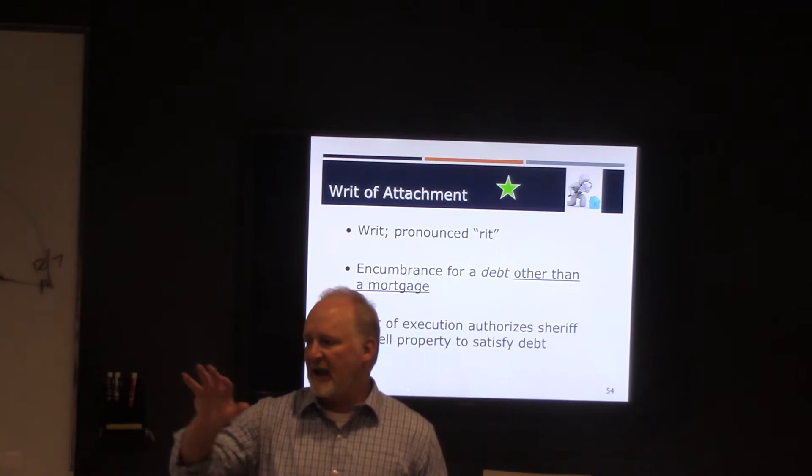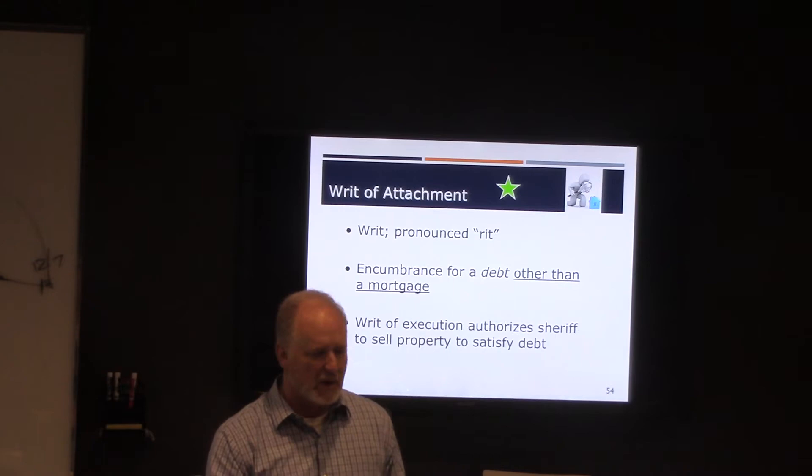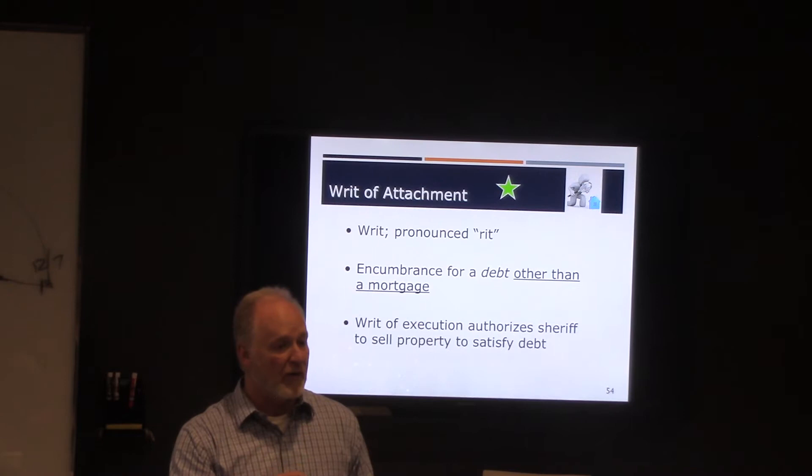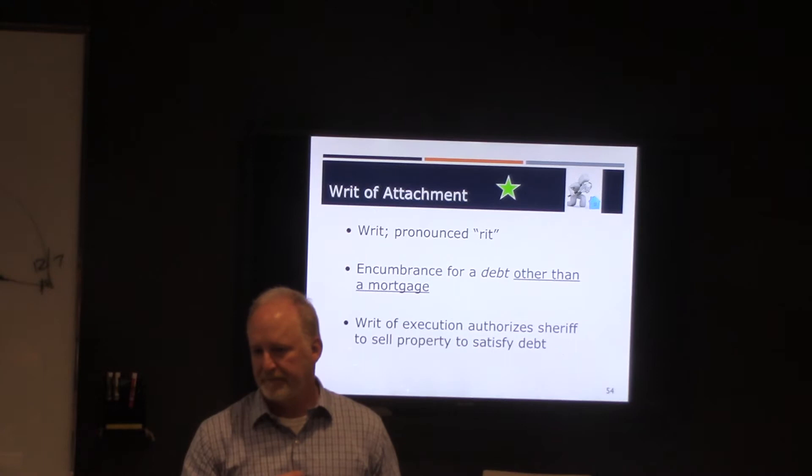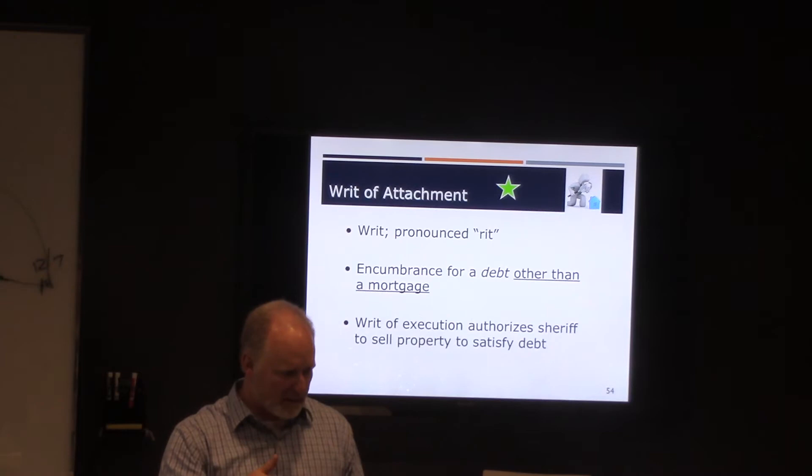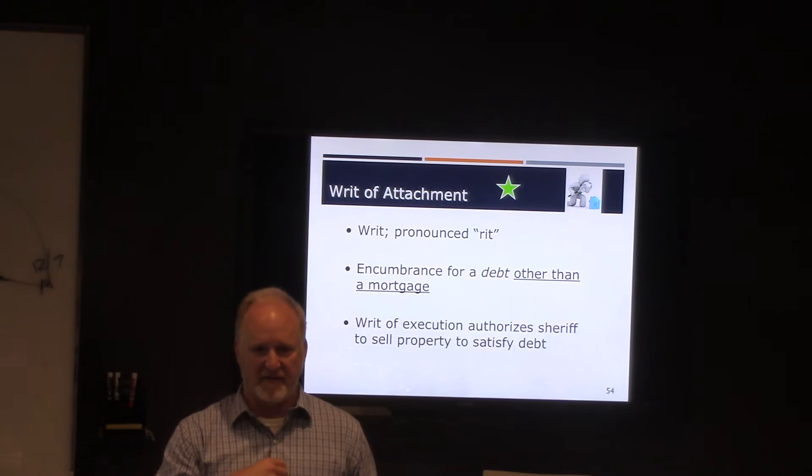Writ of attachment. I'm getting ready to file a lawsuit against you for not paying me some money. Like I was talking with Constance just a moment ago, she owes me money. I'm getting ready to file a lawsuit against her that ultimately I hope to win a judgment. On a writ of attachment, I will file a writ of attachment at the same time that I file a lawsuit. Notice the timeline here. I'm going to file, in the courts, in the register of deeds, I'm going to file a writ of attachment saying, if I win this judgment, I'm going to attach any property that she has in this area.